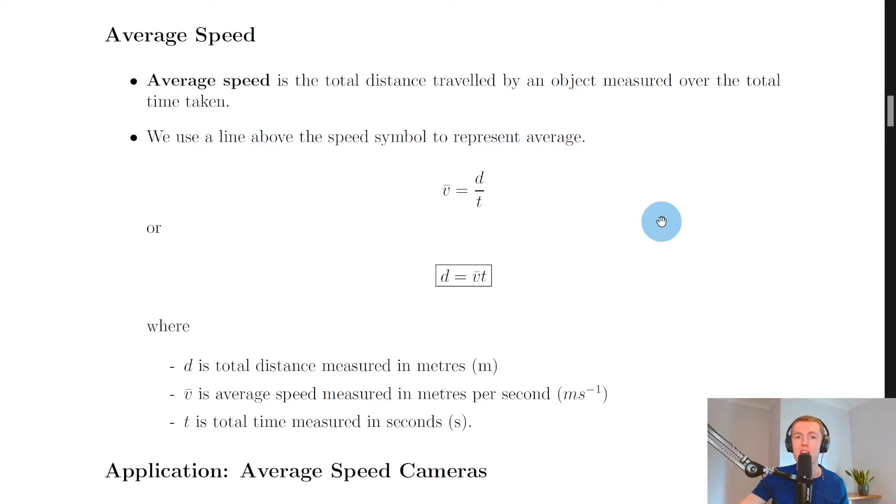So in the previous video, you saw for speed we just use the symbol v, but for average speed, to make it different from just speed or instantaneous speed, we use v with a little bar above it.